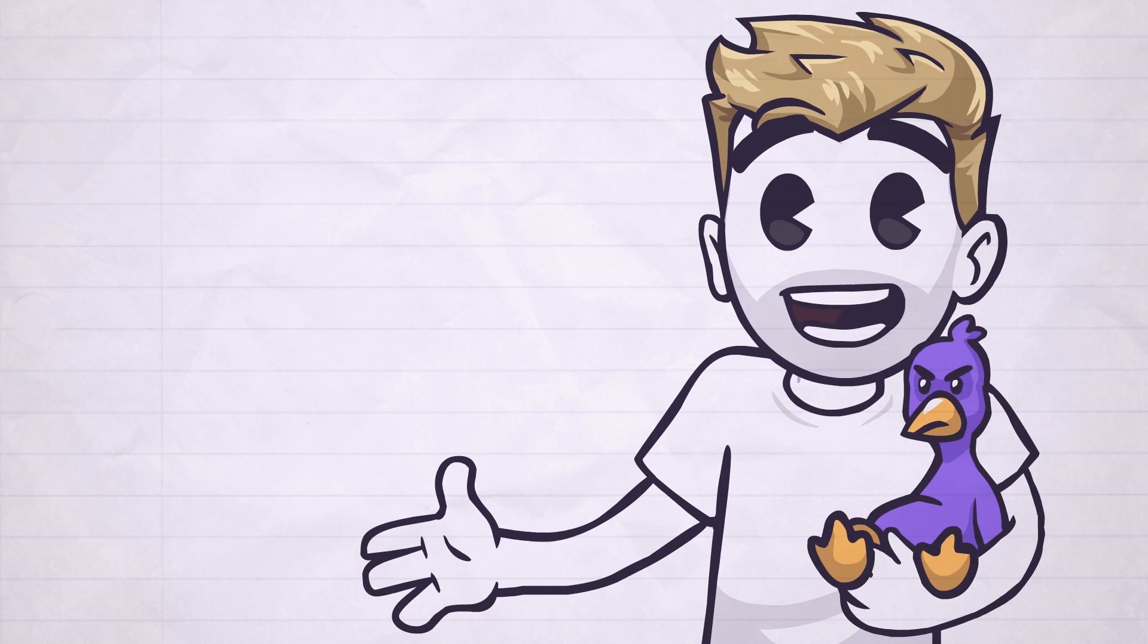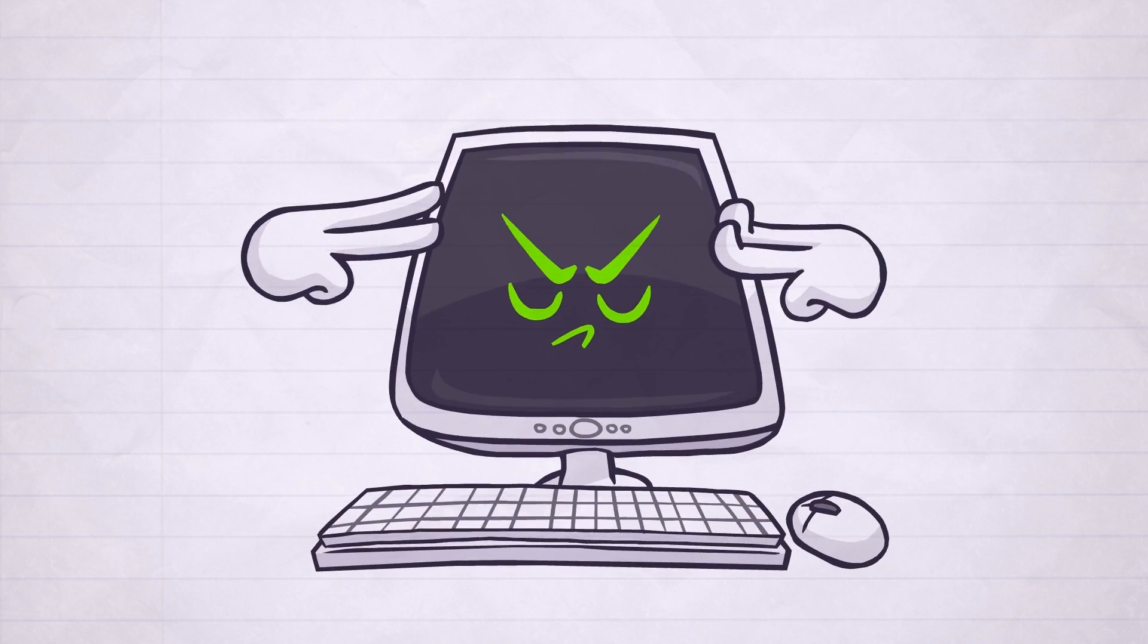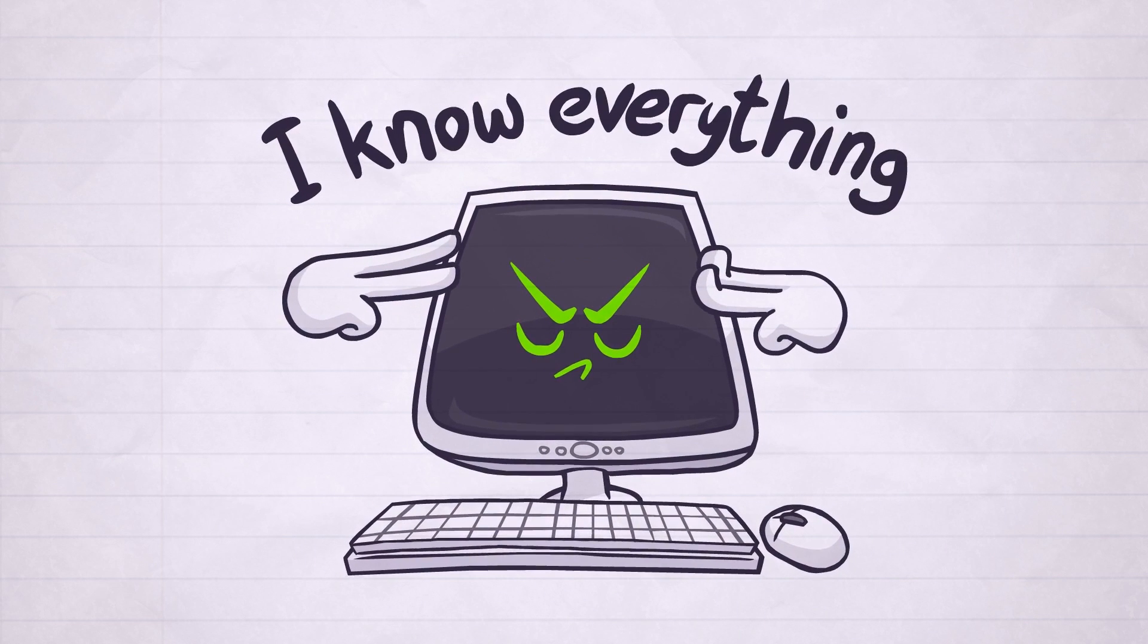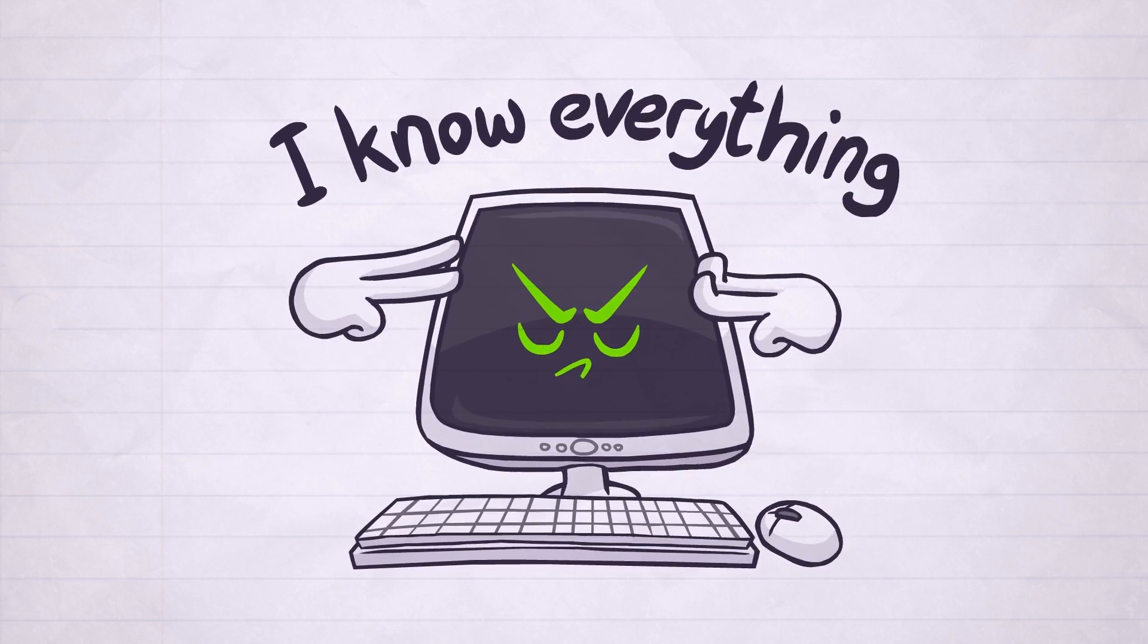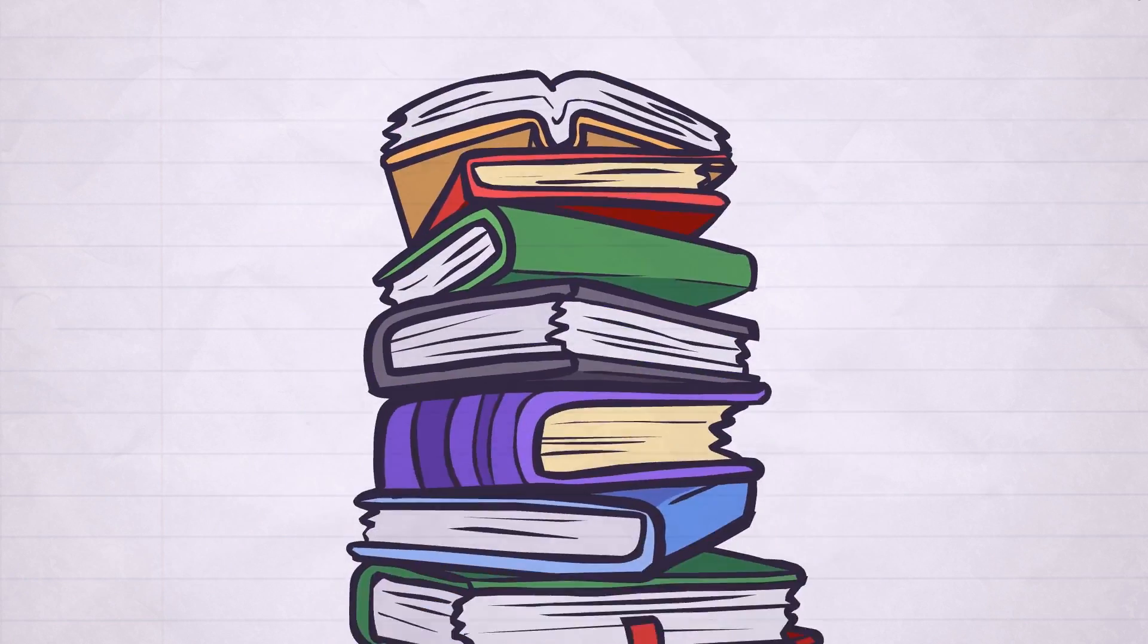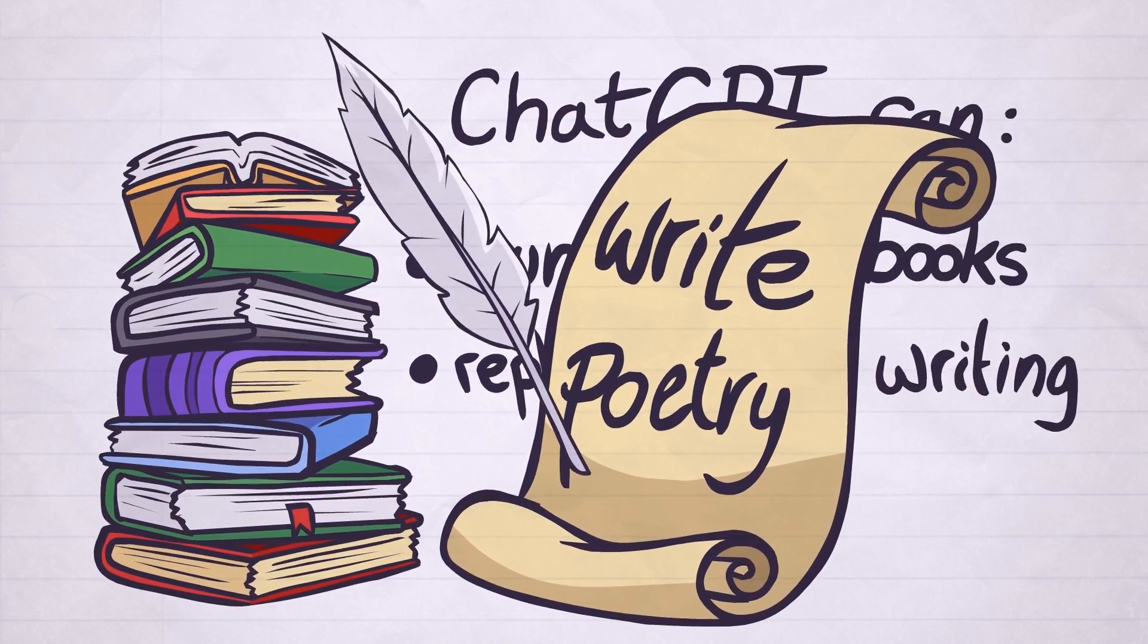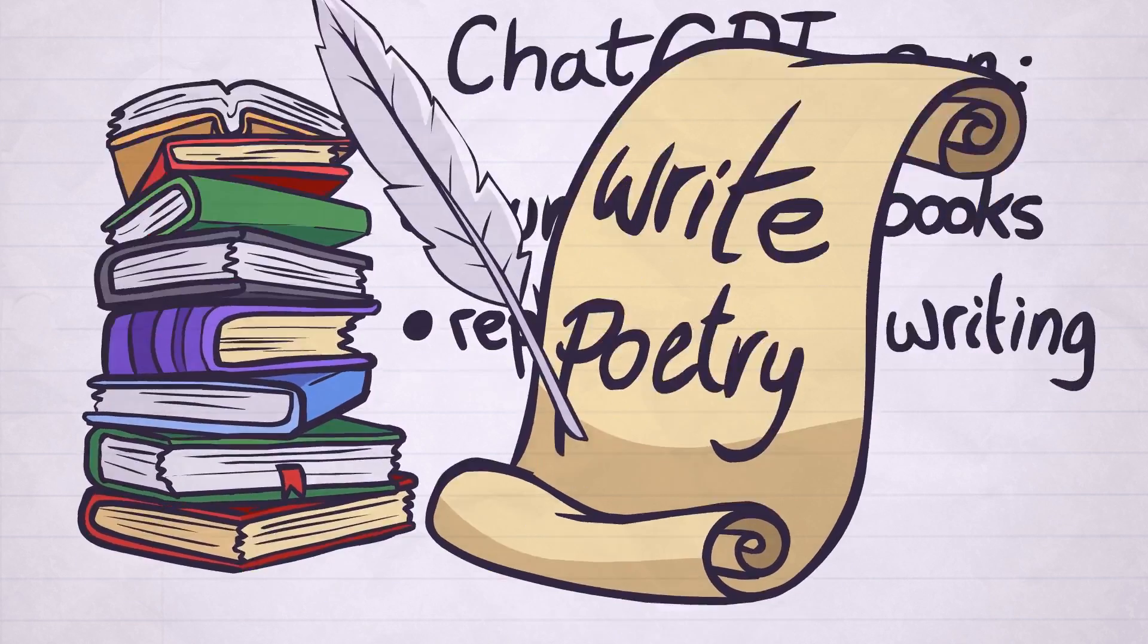ChatGPT is a computer program that launched in November of 2022, where you're basically having a sort of WhatsApp conversation with a robot that holds what feels like every piece of information that has ever existed, excluding everything after 2021 technically. But it can summarize books, rephrase your writing, write poetry, or explain quantum mechanics in a way that even a five-year-old could understand.